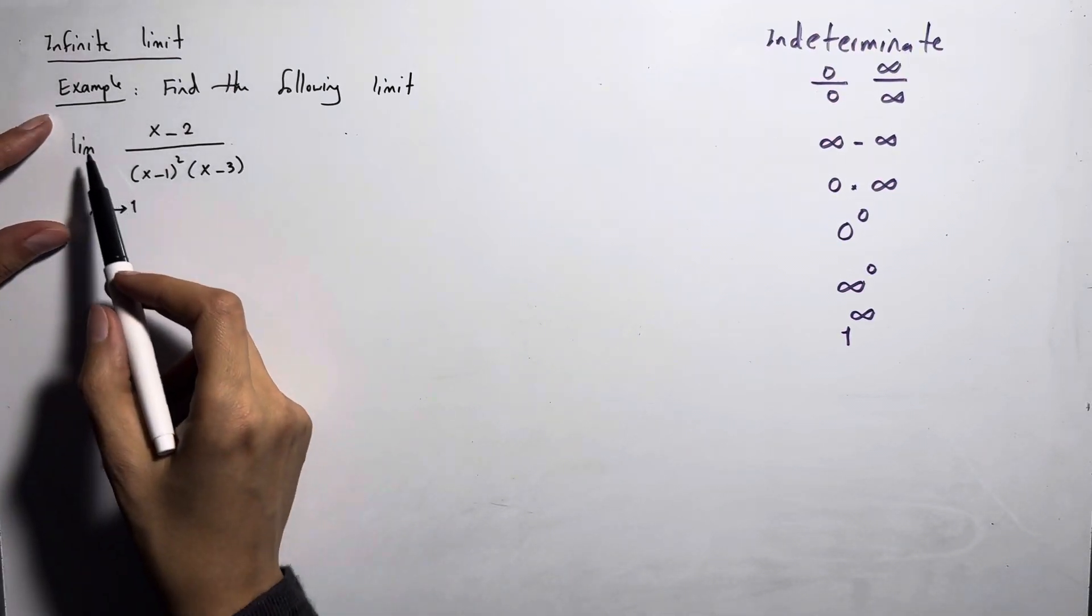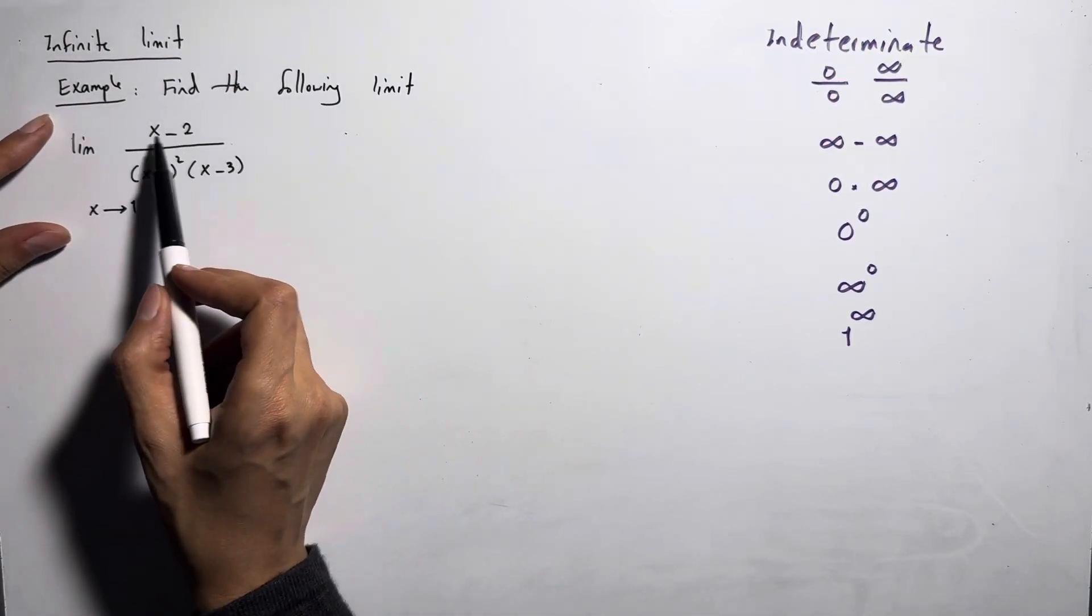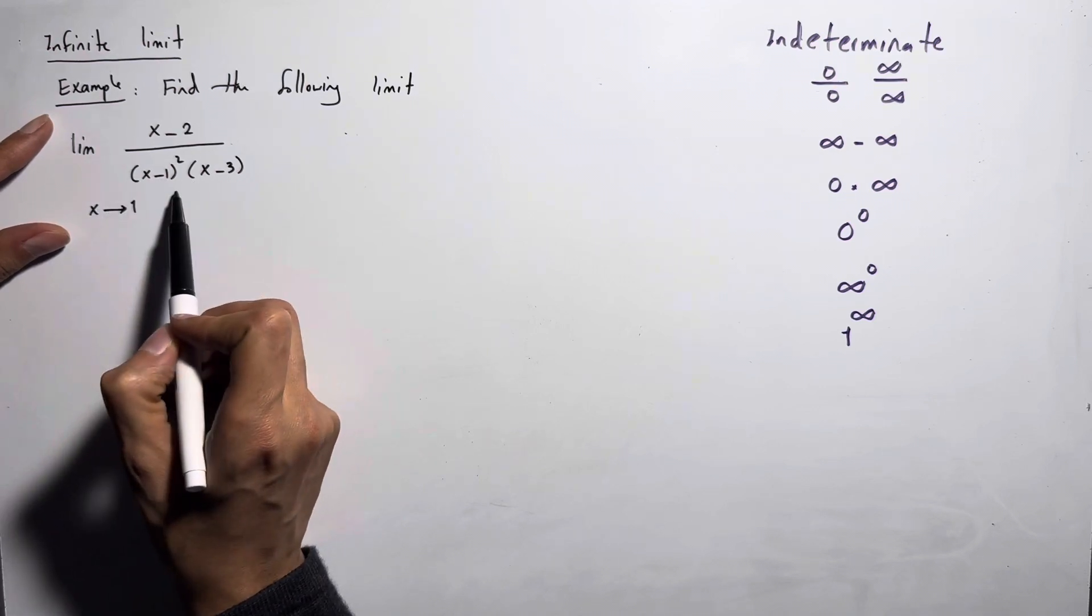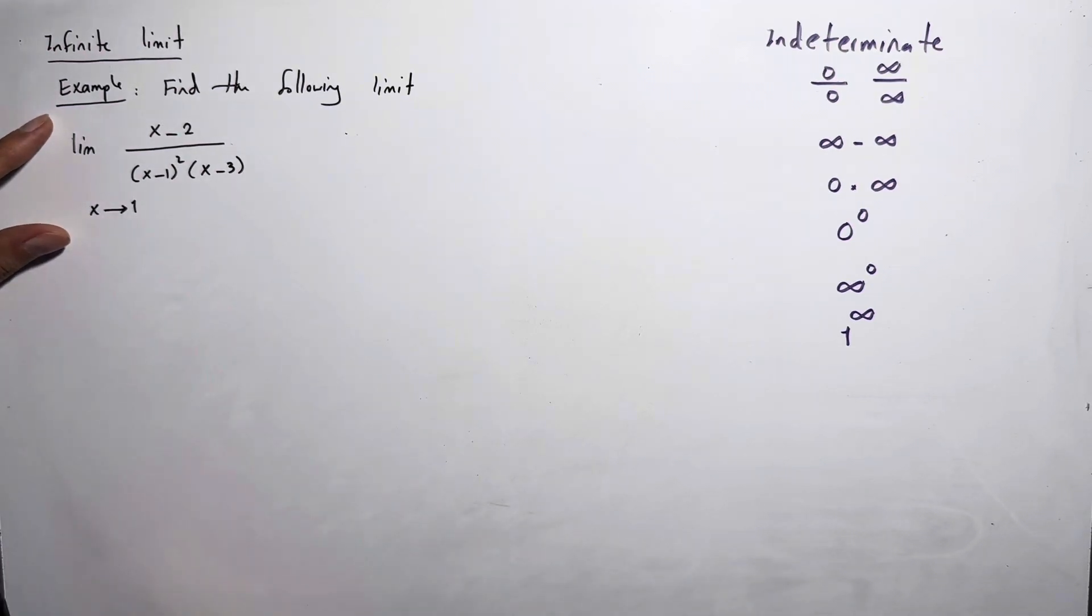Now we want to find the limit of this rational function: x minus 2 divided by x minus 1 to the second power times x minus 3.